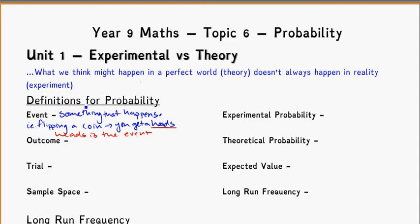Outcome. This is basically all possible—not all possible, put it this way. An outcome is a possible event in a situation.